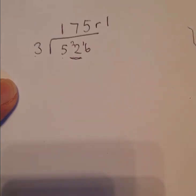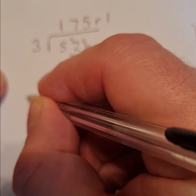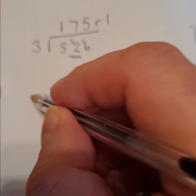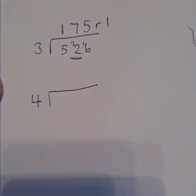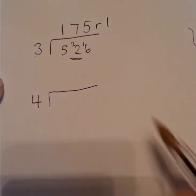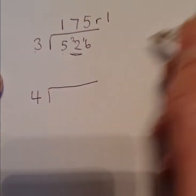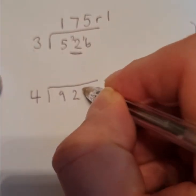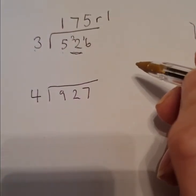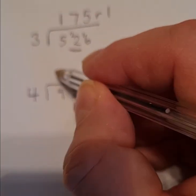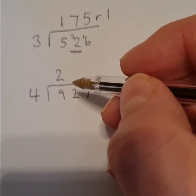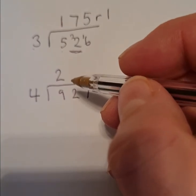Let's have a look at another example. I'm going to do 4 into 927. So we follow the same procedure. How many times does 4 go into 9? Well it goes in twice because 2 lots of 4 equal 8.